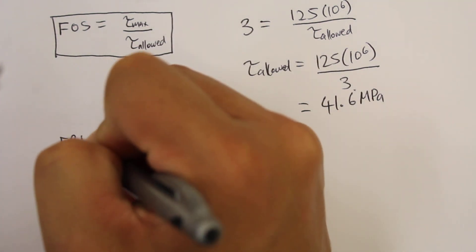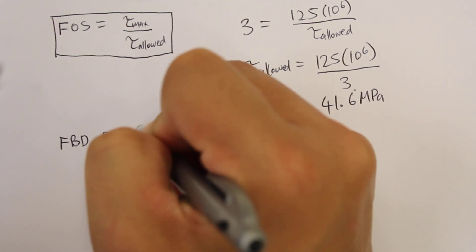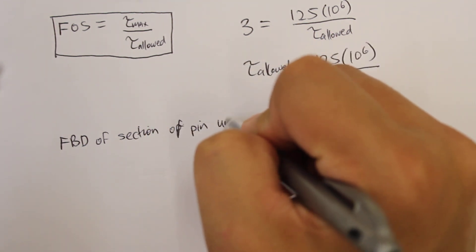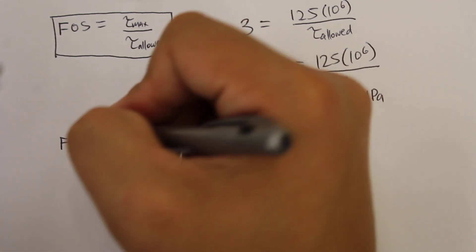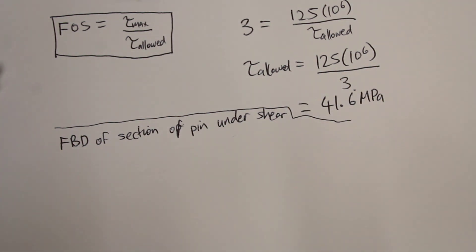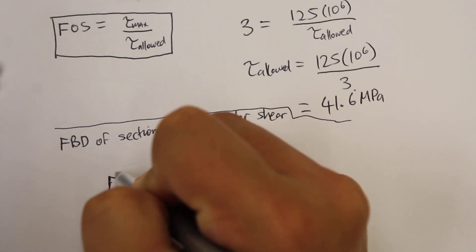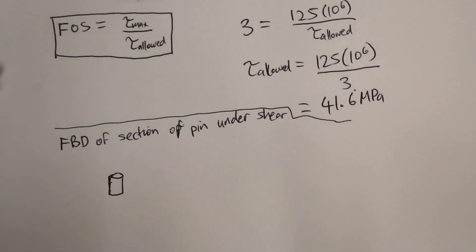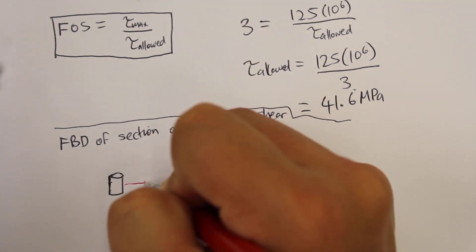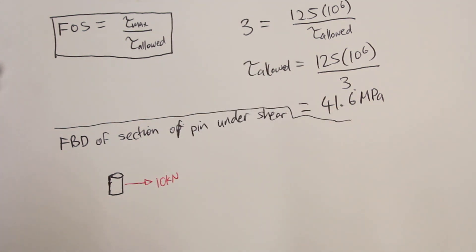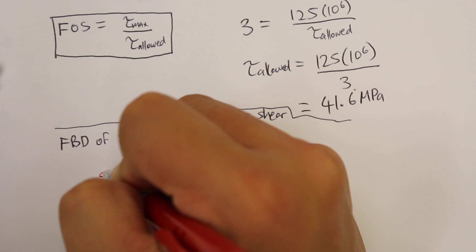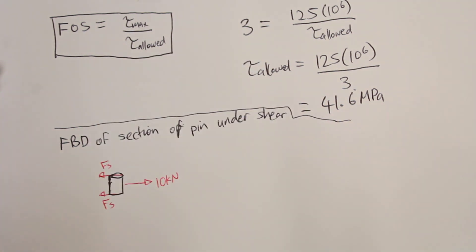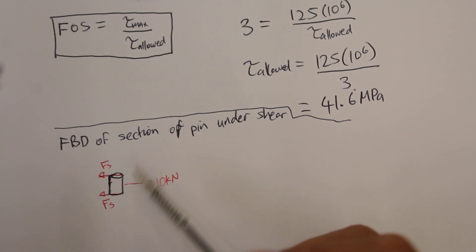We can draw a free body diagram of the section of the pin under shear. We have a 10 kilonewton force trying to pull towards the right, and then we have a reaction force. We'll assume that the reaction force is evenly spread over that pin — that should be close enough. We'll also assume that any bending moment inside the pin is negligible.